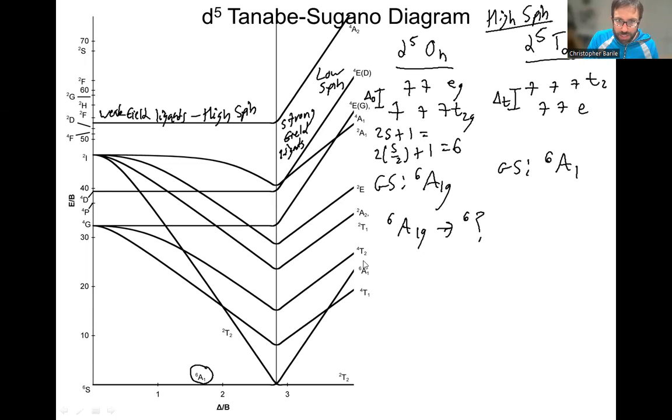Students oftentimes get confused here because if you look at this, you say, well wait a second, there's a sextet A1. No, no, no, you'll be double counting there. You have to follow this A1 back. This A1, sextet A1, is the same as this sextet A1 running along the baseline, running along the ground state.